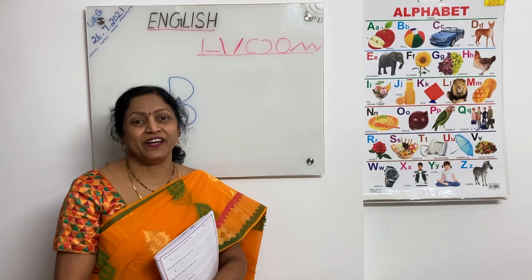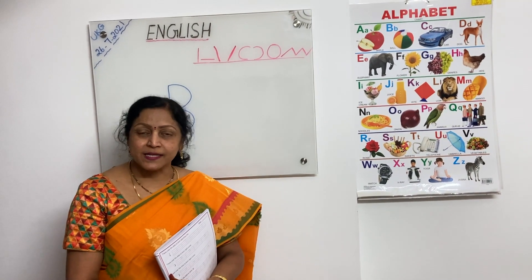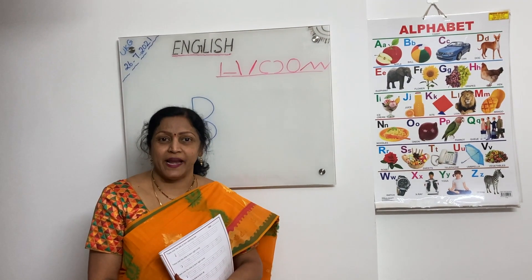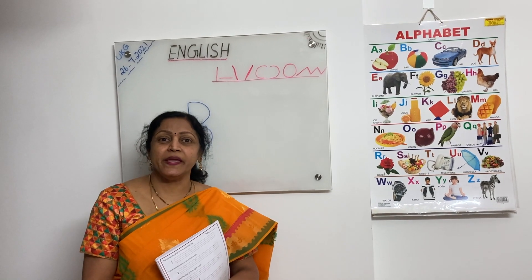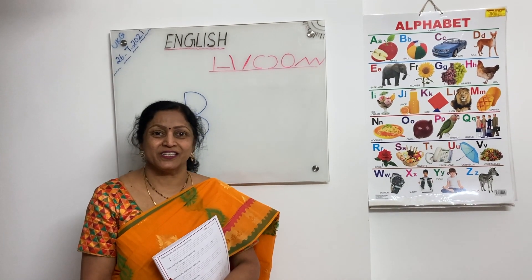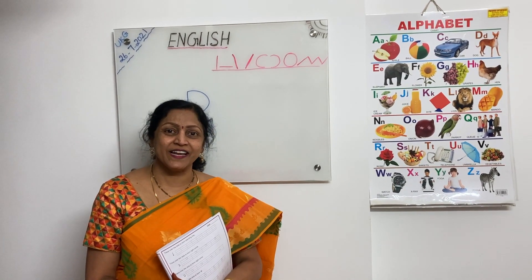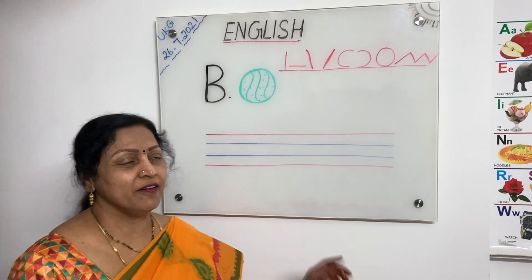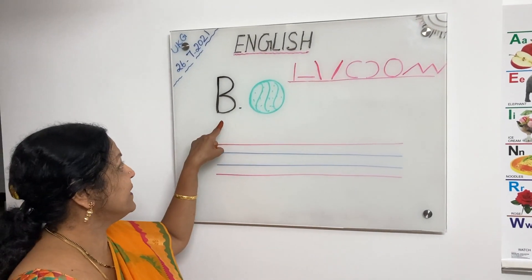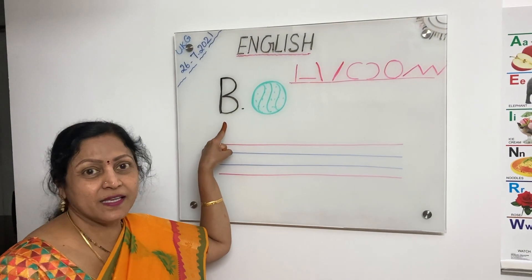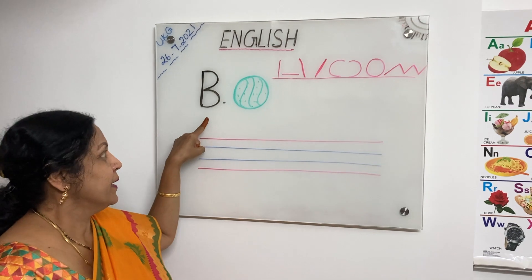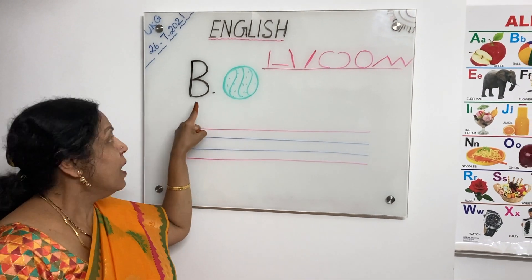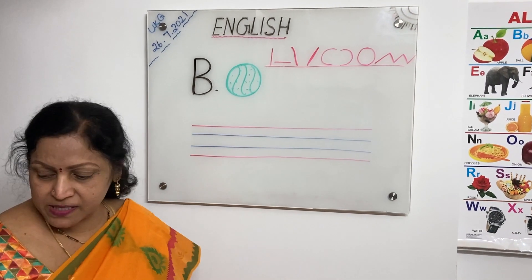Nice, children. Now let's learn how to write the letter B on the lines. Shall we learn, children? Come on, look at the point. Children, what is this letter? This is capital letter B. B for ball. How to write B, children?